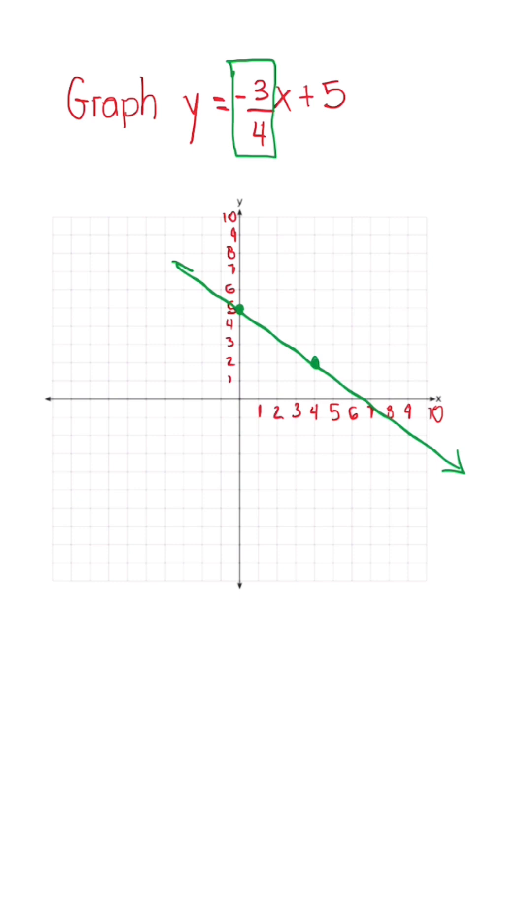Another way that we could solve this same problem, if you're not comfortable with using rise over run, is substituting. We can use x values of 0, 4, and 8. The reason we want to use those x values is because they're easy to work with our denominator of 4.